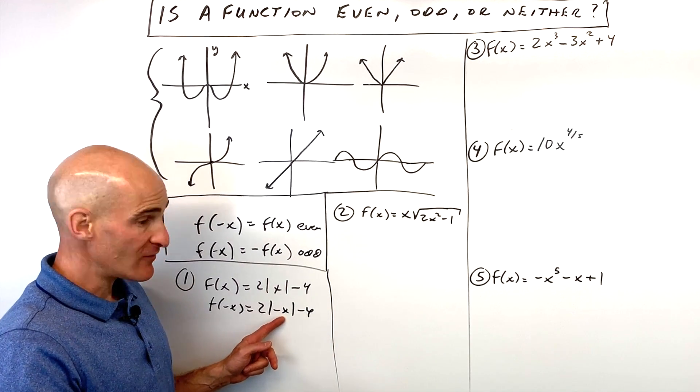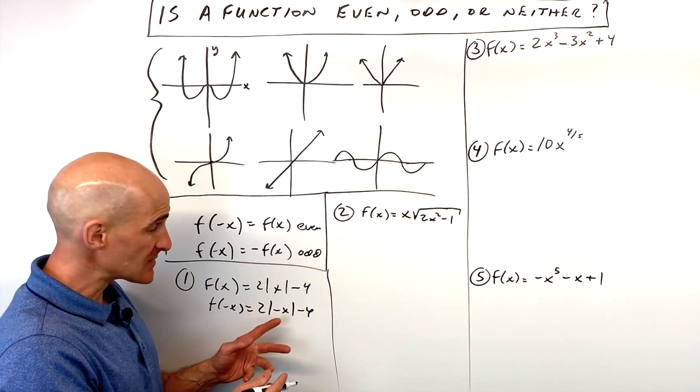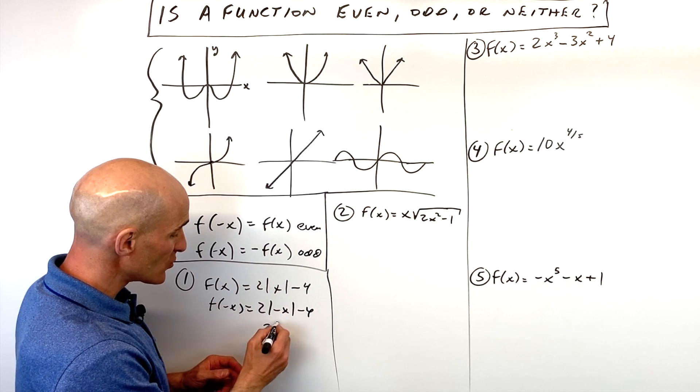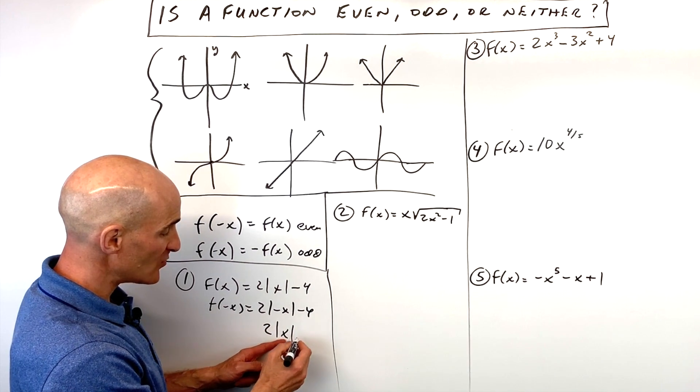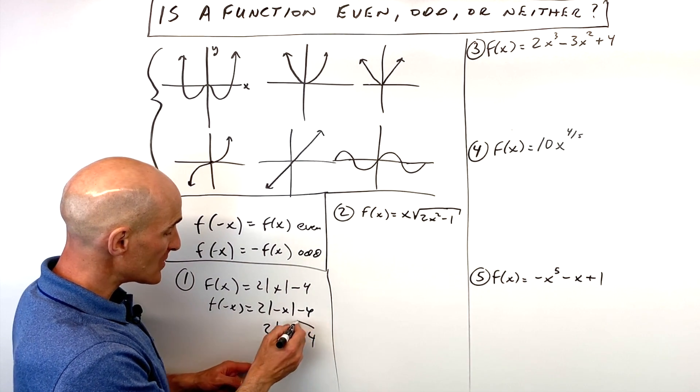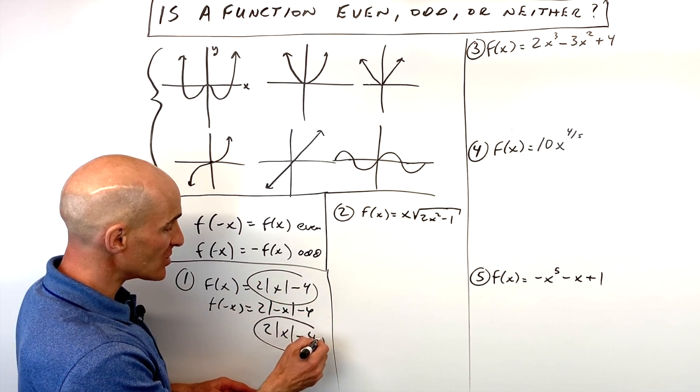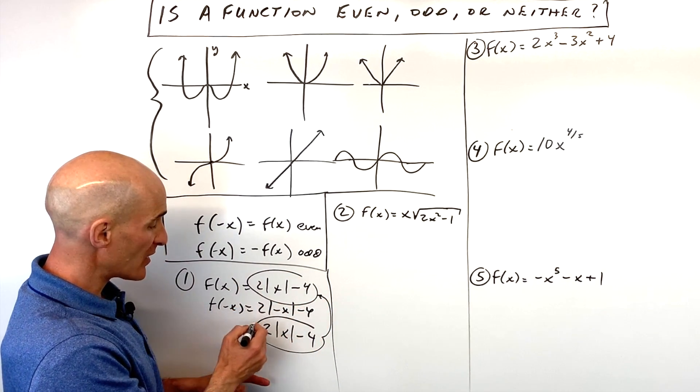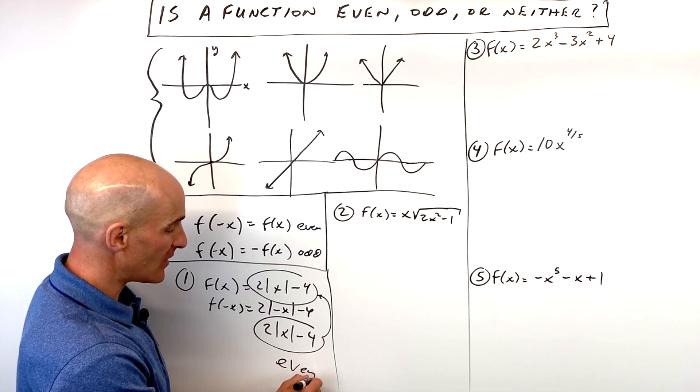We know when you take the absolute value of a negative quantity or a positive quantity, you end up getting that positive quantity. So this is really going to be the same as 2 times the absolute value of x minus 4. You can see we're getting back the original function, the original equation, when we plugged in that negative x. That tells us that this is going to be an even function.